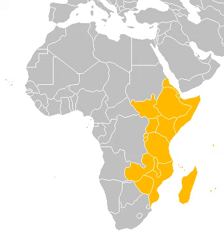According to the CIA, as of 2017, the countries in the Eastern Africa region have a total population of around 537.9 million inhabitants.